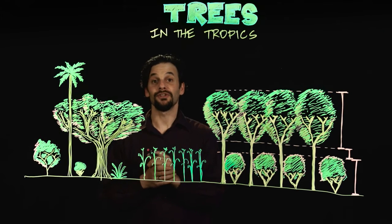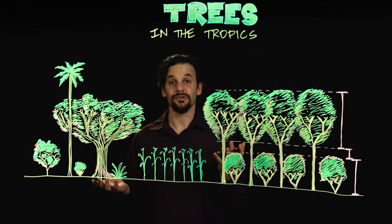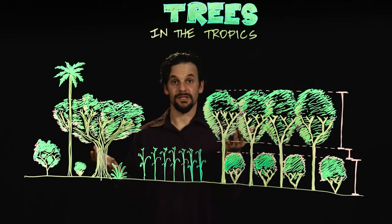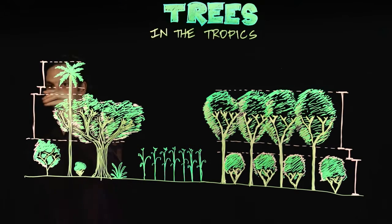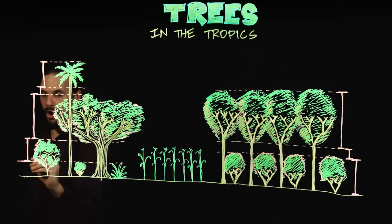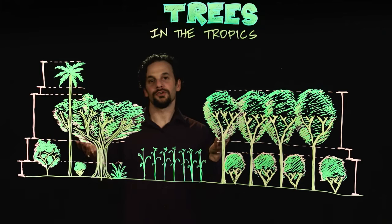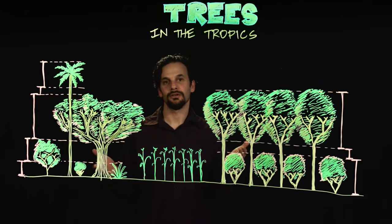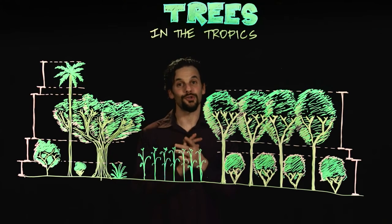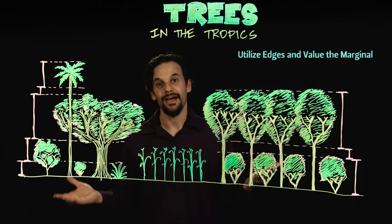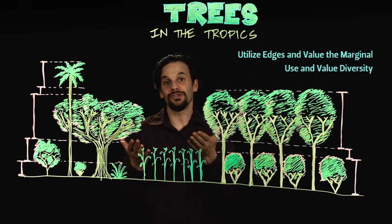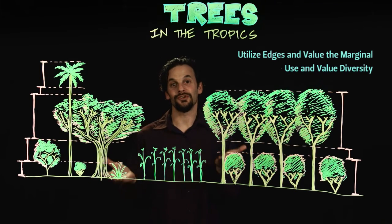If the layers are diverse, with varying heights of trees and spaces between plants, then there is more edge. Remember our permaculture principles: utilize edges and value the marginal, and use and value diversity.